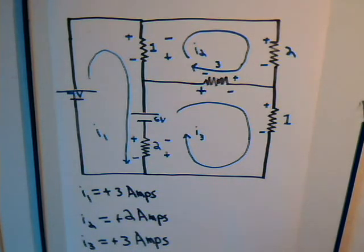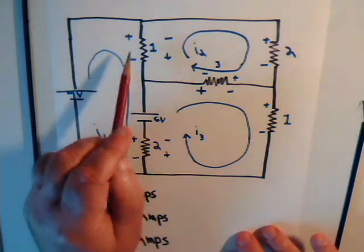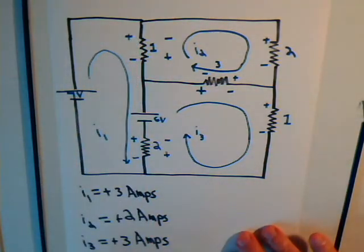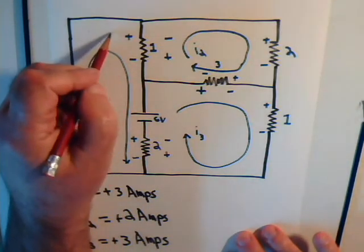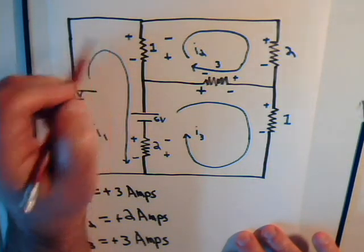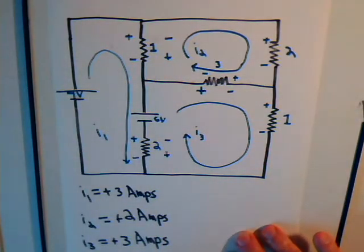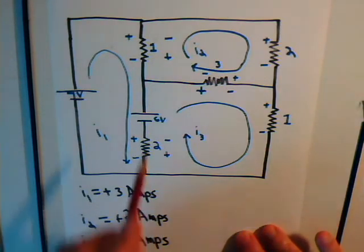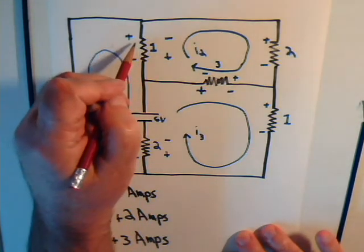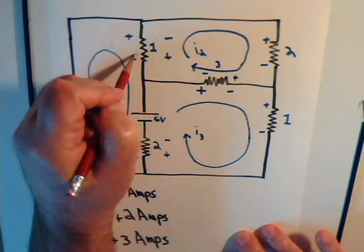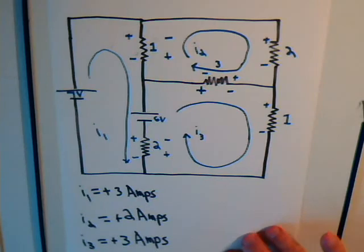The amount of current going through this resistor, here we have I1 at 3 amps in this direction, and here we have I2 going up in this direction with 2 amps, so the net current through this resistor will be 1 amp going in this direction.